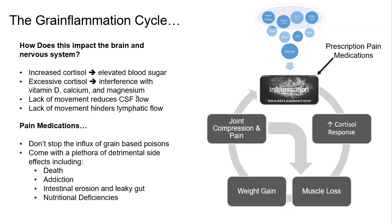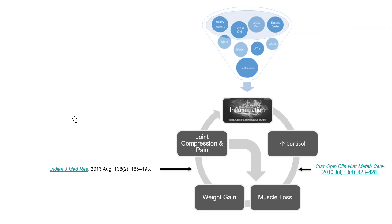The real solution is finding the origin of the pain. That's why we come back to the grain inflammation cycle — shut off the input, you can stop the inflammation. If you can stop the inflammation, you can stop the pain.